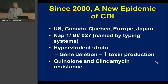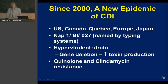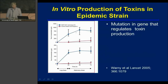This hypervirulent strain is unusual in that it has a gene deletion in the gene that regulates toxin production, so rather than having normal regulation, the organism can produce 20 to 30 times more toxin in vitro — and we presume that is what is happening in humans as well. In addition, it has quinolone and clindamycin resistance.